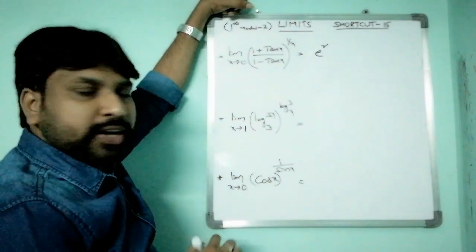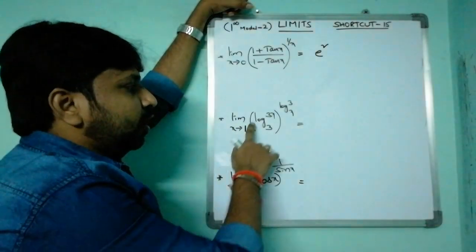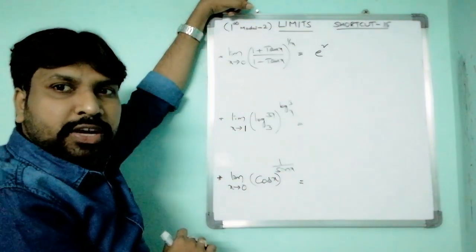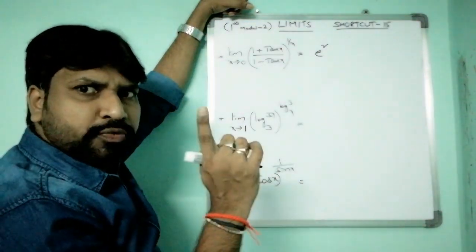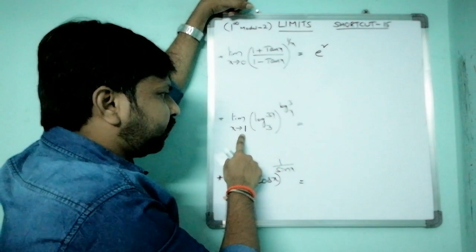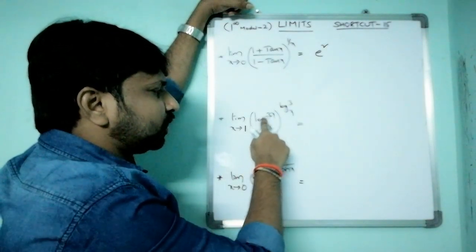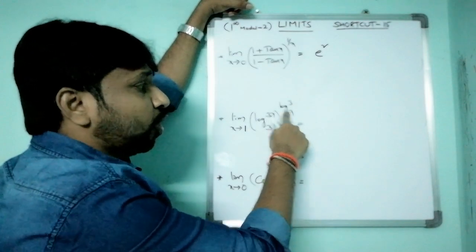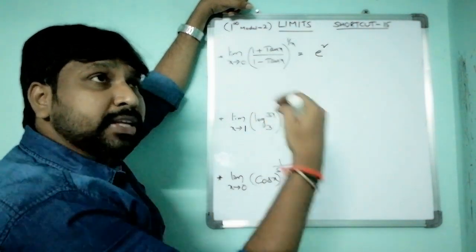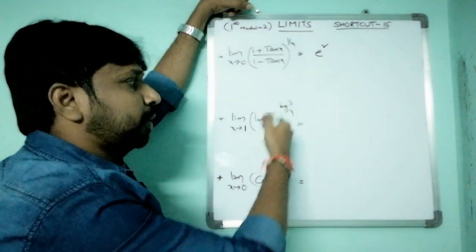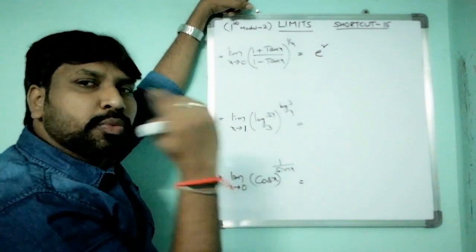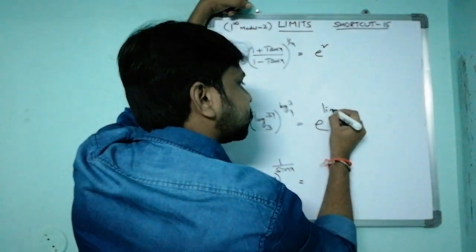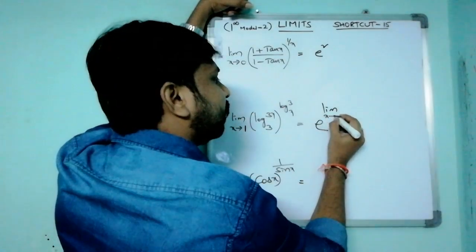Question number 2: limit x tends to 1 of (log₃x)^(log_x 3). Check: substituting x = 1 gives log₃(1) = 0 and log₁(3) = log 3/0 = ∞. So 1^∞ model confirmed.